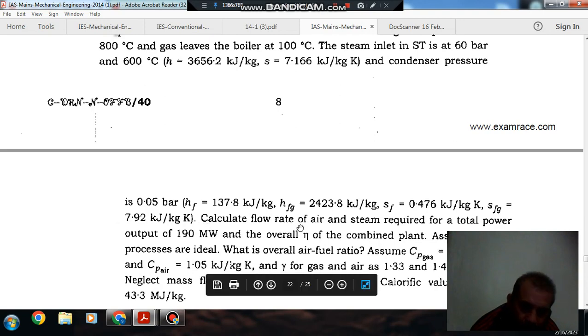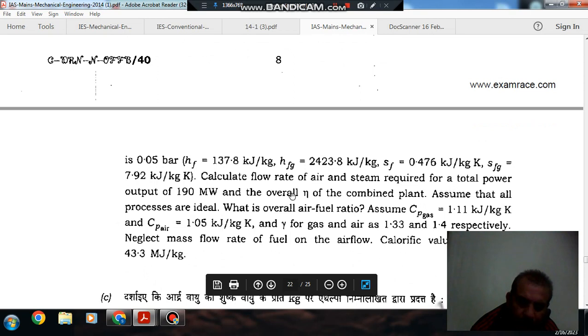Calculate flow rate of air and steam required for total power output of 190 MW and overall efficiency of combined plant. Assume that processes are ideal but with the overall air-fuel issue, assume Cp D = 1.11 kJ/kg·K and gamma for gas and air as 1.33 and 1.4 respectively. Neglect flow rate of fuel on the air flow. Calorific value of fuel is 43.3 MJ/kg.